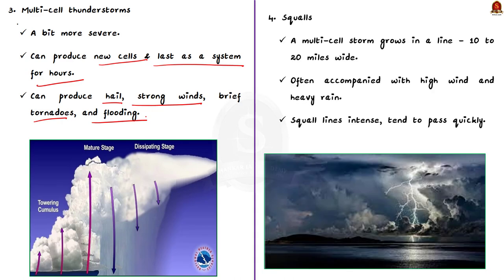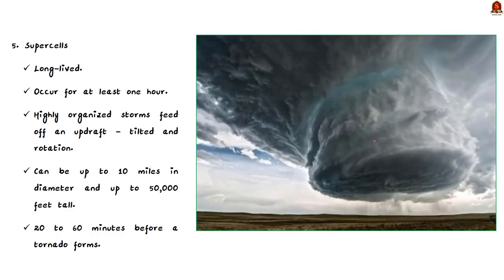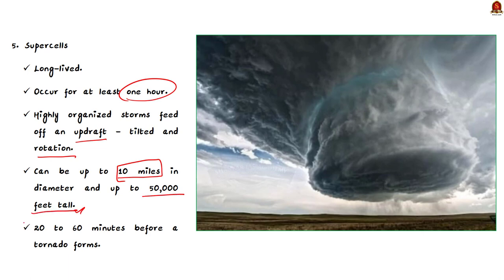The next classification is squalls and supercells. When multi-cell thunderstorms occur in a straight line that is 10 to 20 miles wide, we call that a squall line. This group of storms is often accompanied by high winds and heavy rain. While squall lines can be very intense, they tend to pass very quickly — they are short-lived but produce high winds and heavy rain. Moving on to supercells: supercells are long-lived, occurring for at least one hour. These heavily organized storms feed off rising hot air that is tilted and rotating. This rising hot air column, or updraft, can be up to 10 miles in diameter and up to 50,000 feet tall.